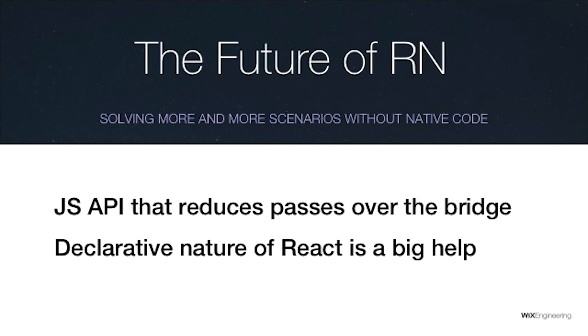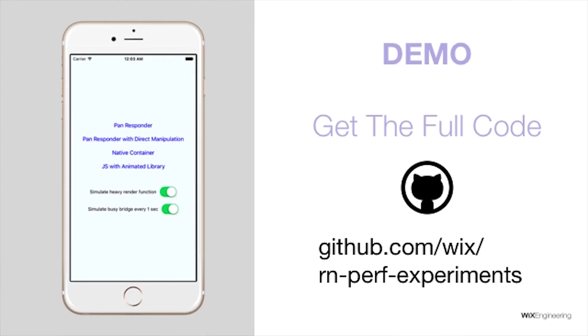The future of React Native is solving more and more scenarios without native code, by inventing JavaScript APIs designed to reduce bridge passes to a minimum. The declarative nature of React is a big help. This can't solve everything, but it can solve many day-to-day problems. All the code I've shown is available in our public GitHub repository called 'RN Performance Experiments.' There's an example app that implements the swipeable component four times: naive JavaScript, direct manipulation, purely native, and with the Animated library declaratively. You can toggle flags to make the app noisy over the bridge and actually feel how smoothness changes and starts to jitter between implementations.